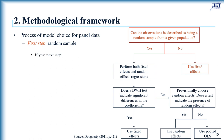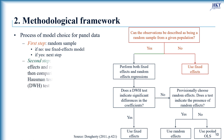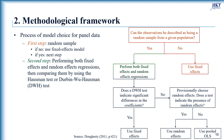In the first step, if the observations are a random sample, we perform the next step; otherwise we use fixed effects as the final decision. In the case of a random sample, we continue to the second step by performing both fixed effects and random effects models, then compare them using the Hausman test — also known as the Durbin-Wu-Hausman or DWH test — where the null hypothesis is that the preferred model is random effects versus the alternative of fixed effects. It tests whether unique errors are correlated with the regressors. If the Hausman test indicates significant differences in the coefficients, the final choice is the fixed effects model.